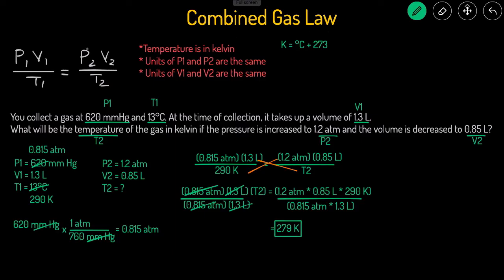So that's it for combined gas law. Just know that the equation is P1 V1 divided by T1 equals P2 V2 divided by T2. This is relevant when the pressure, volume, and temperature are all changing in the problem. Remember that temperature has to be in degrees Kelvin. The units of P1 and P2 have to be the same, and the units of V1 and V2 have to be the same. After that, it just becomes algebra.